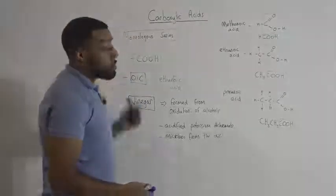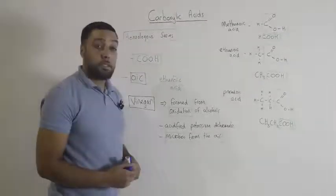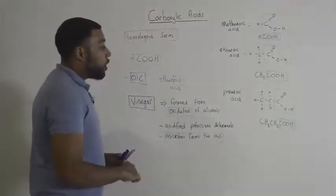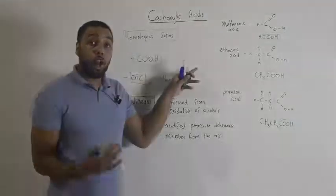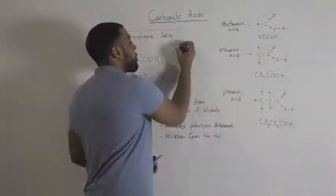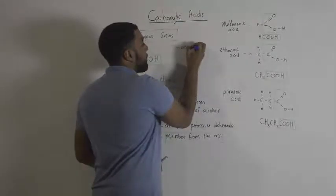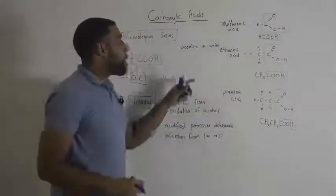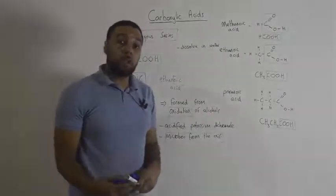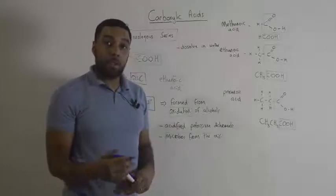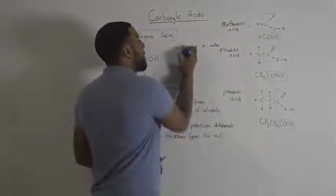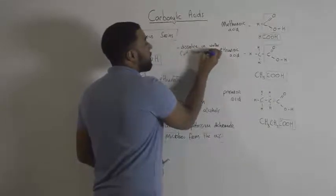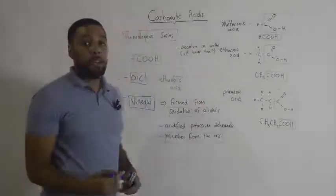Now you need to know some of the properties of carboxylic acids. The first property is that they are all soluble or able to dissolve in water. When these carboxylic acids dissolve in water, they form acidic solutions. That means that the pH is lower than 7, because that's the pH of an acid.